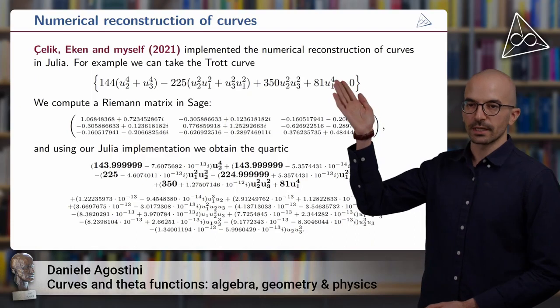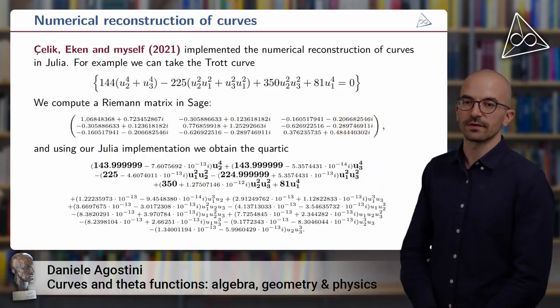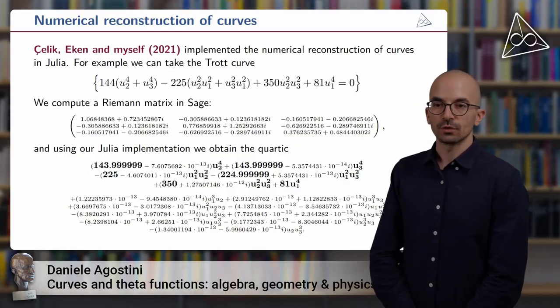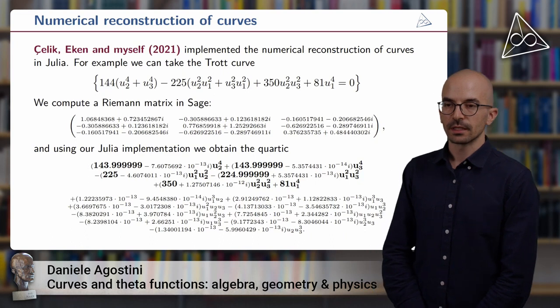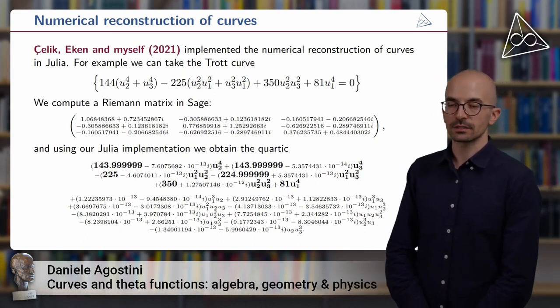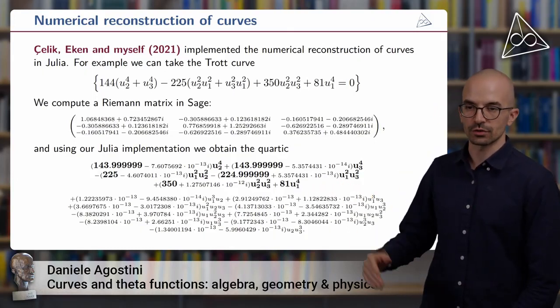So we start with the algebraic curve, which is the Trott curve in this case. It's defined over the rational numbers. It's a smooth quartic in three variables u_1, u_2, and u_3. So this is a smooth curve, so you will get a corresponding three by three Riemann matrix, and now we can apply the procedure described before to this Riemann matrix.